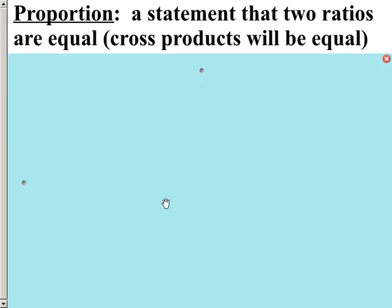As we start working with ratios, we come across the word proportion. A proportion is a statement that two ratios are equal. One way we can test to see if they're equal is we can use cross products, but there are other ways too, and we're going to look at several of them.